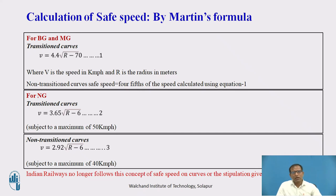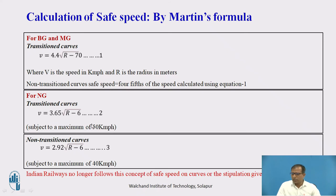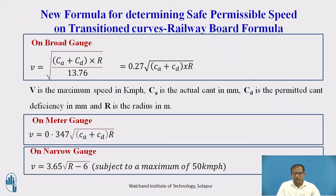We have Martin's formula to calculate safe speed for broad gauge and meter gauge. For transition curves: V = 4.4√(R) − 70, where V is in kmph and R is in meters. For non-transition curves, the safe speed is four-fifths of the value from that equation. For narrow gauge, the formula is V = 3.65√(R) − 6, subject to a maximum of 50 kmph. For non-transition narrow gauge curves: V = 2.92√(R) − 6, subject to 40 kmph. However, Indian Railways no longer uses these equations.